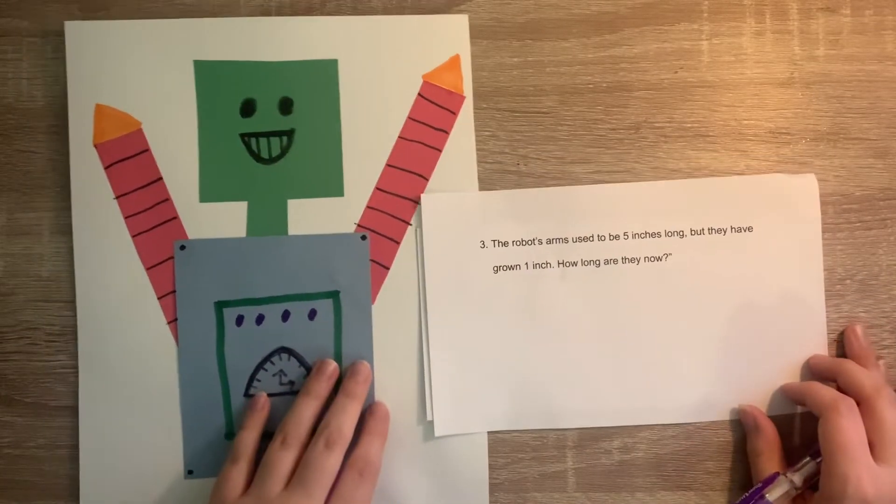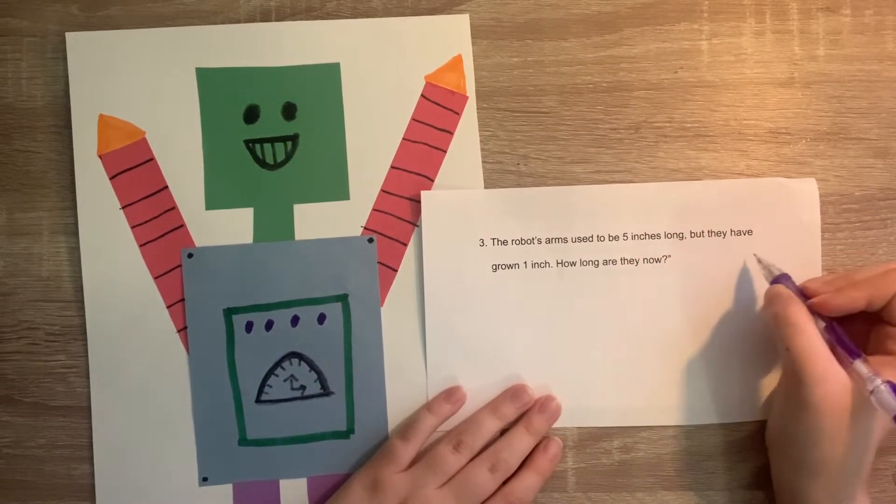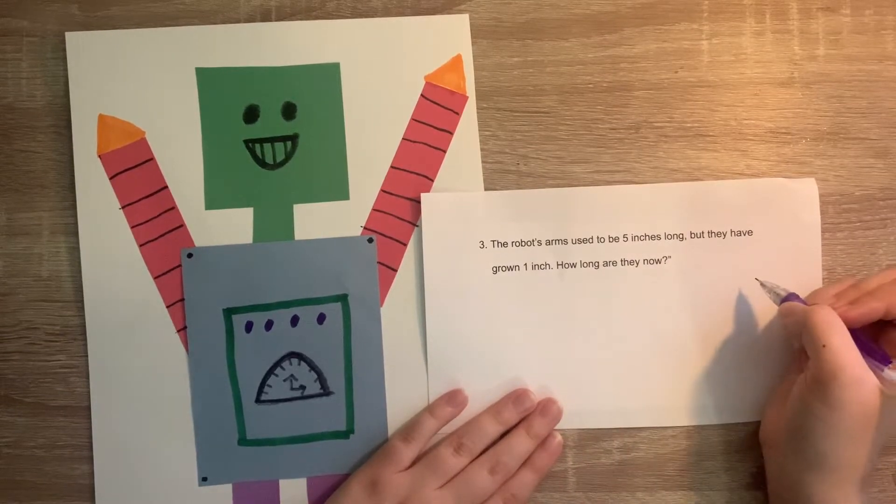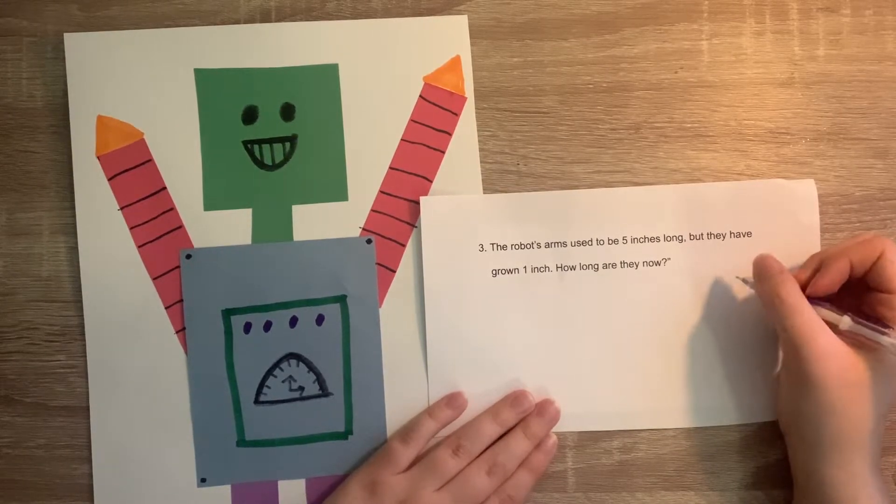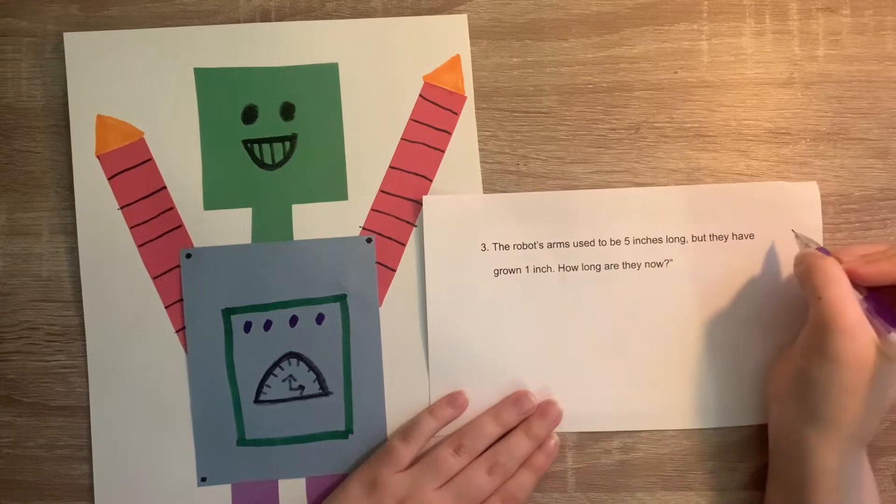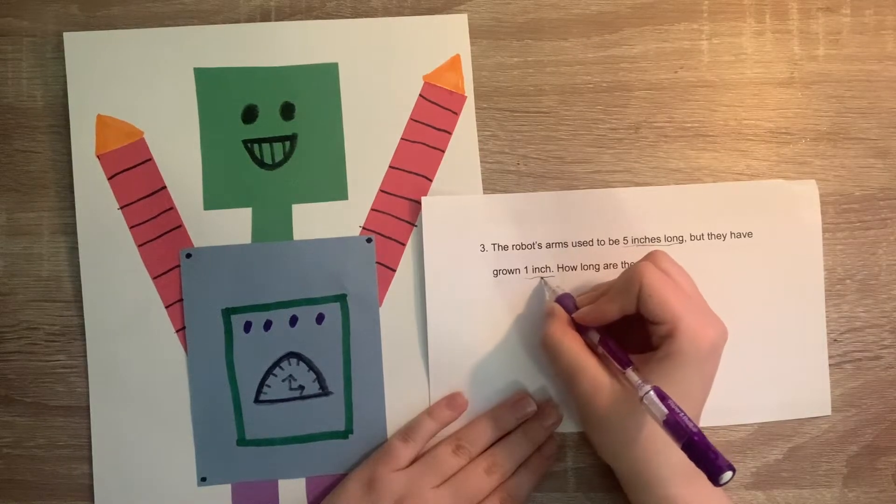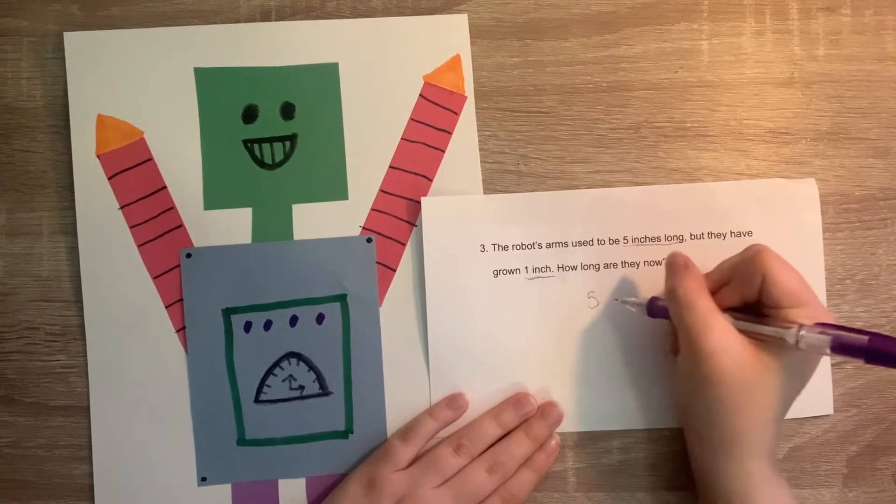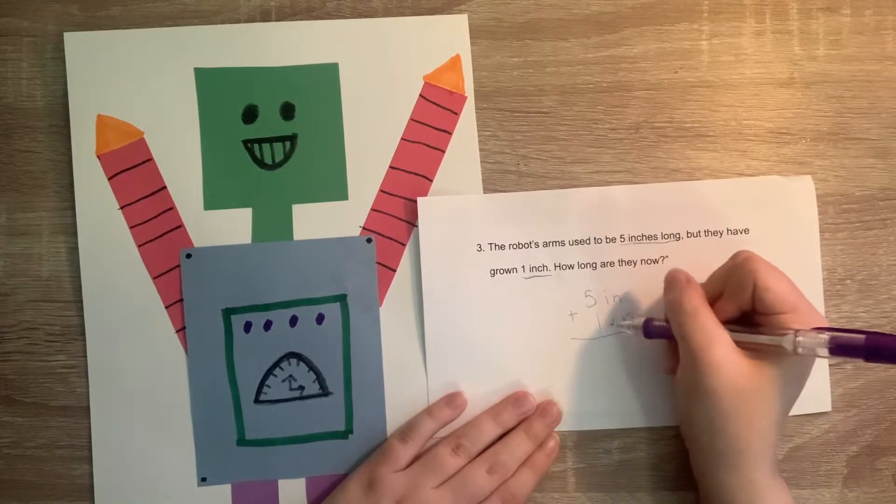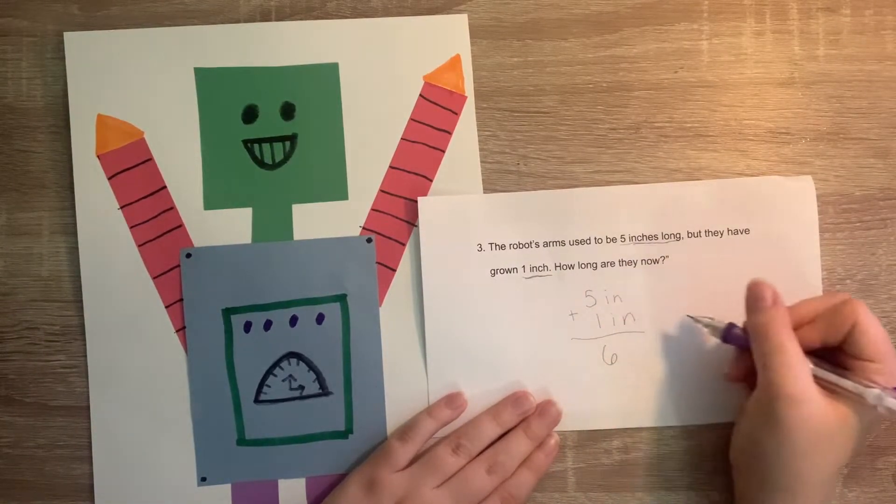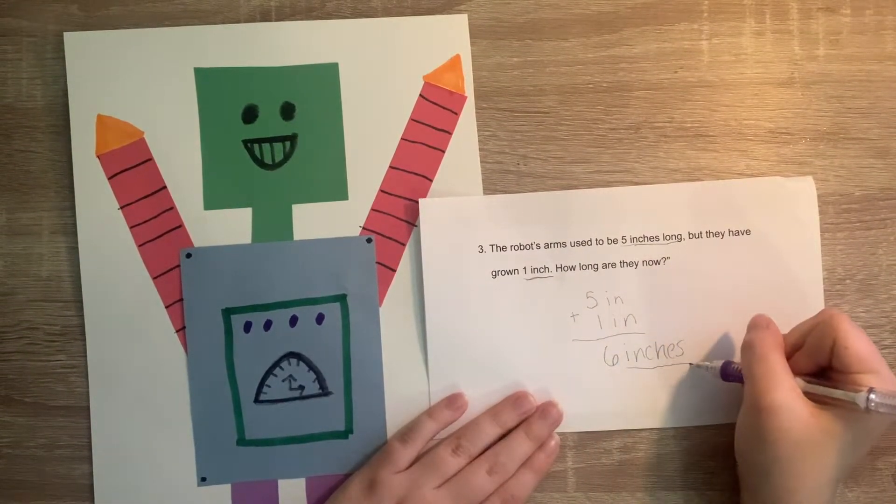The next question about our robot says the robot's arms used to be 5 inches long but they have grown 1 inch. How long are they now? Is this a subtraction or addition problem? Yes, it's addition because they have grown one more inch. So it used to be 5 inches. But now it has an additional inch. So we are going to do 5 inches plus 1 inch. And 5 plus 1 is 6. So the arms are 6 inches now. And the inches is the unit.